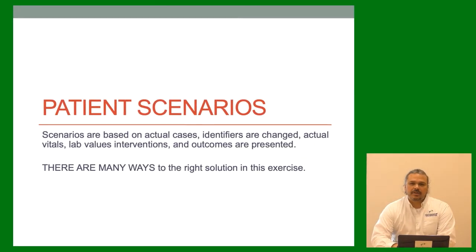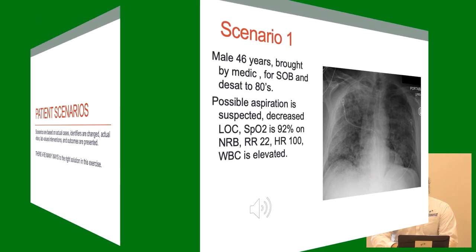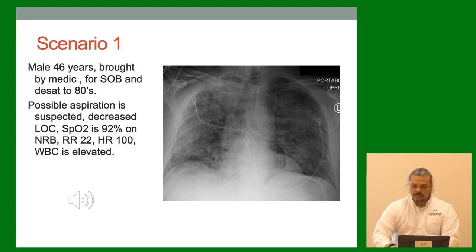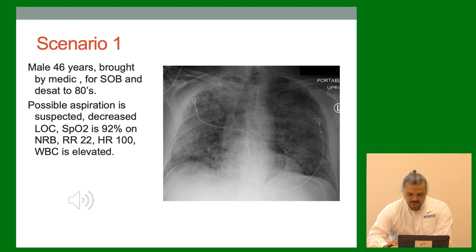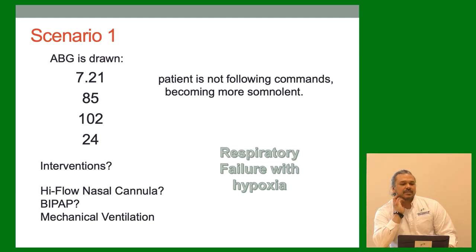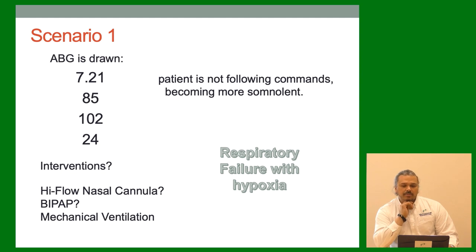Patient care scenario: Male, 46, brought in by medics for shortness of breath and desat to the 80s. Possible aspiration suspected. Decreased breath sounds, SAT 92% on non-rebreather, respiratory rate in the 20s, heart rate 100, elevated white blood count. X-ray doesn't look great — may have aspirated. ABG: 7.21 / 85 / 102 / 24. Patient is acidotic, CO2 is high — respiratory failure. Bicarb is normal. PaO2 of 102 looks normal but this patient is on 100% oxygen, so they're actually pretty hypoxic.